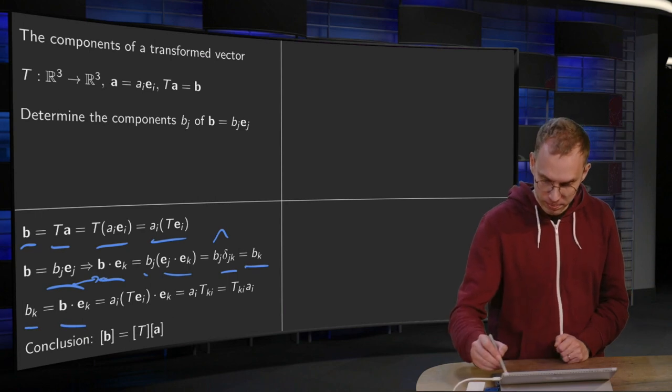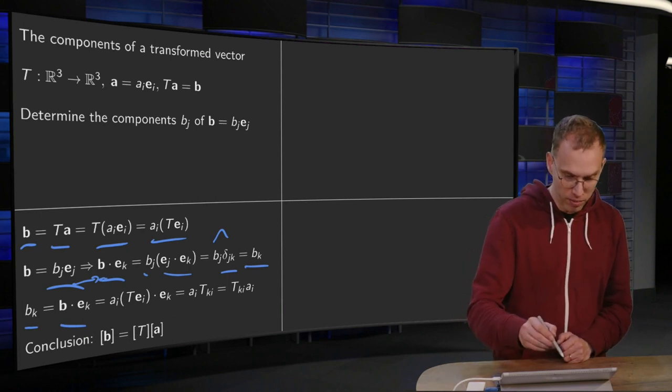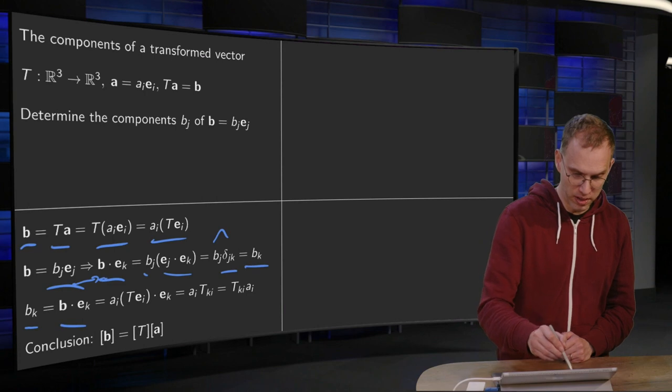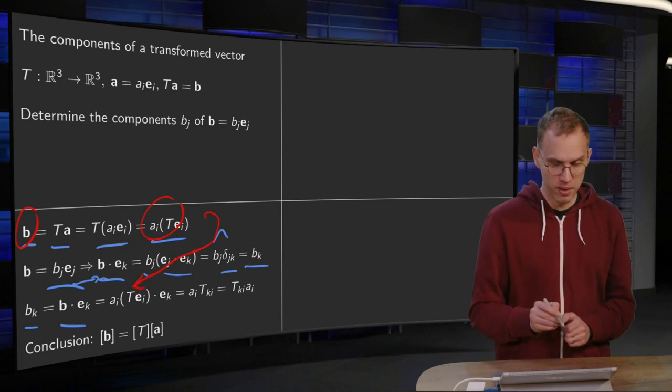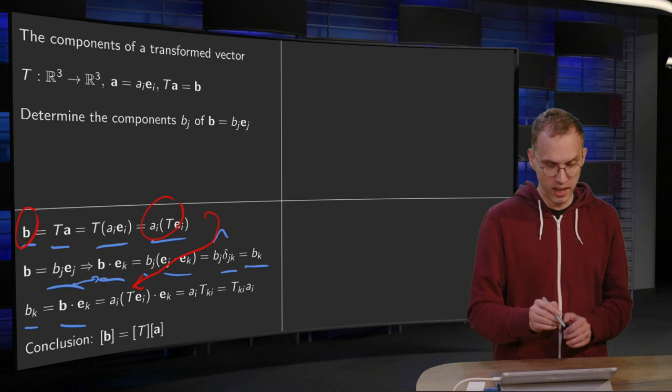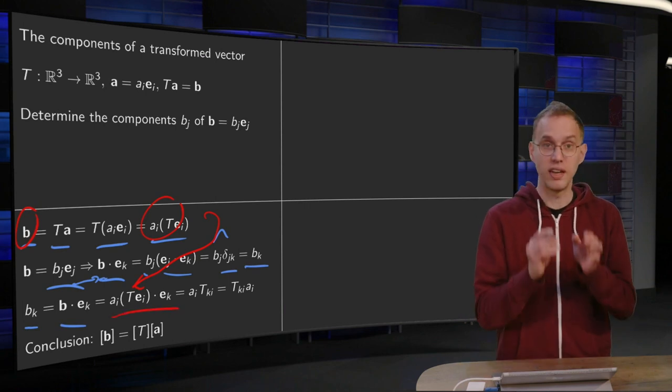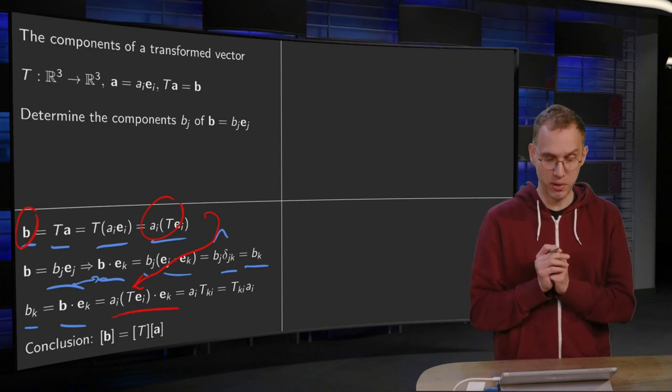And now we plug in what we know about B. B equals Ai T(ei), so we plug that in over there for B. So Bk equals Ai T(ei) inner product Ek.